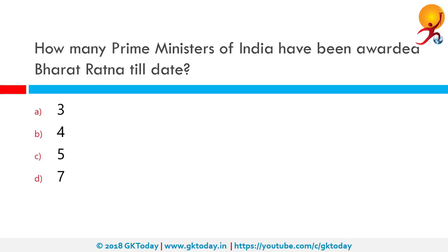How many Prime Ministers of India have been awarded Bharat Ratna till date? So far, 7 Prime Ministers of India have been awarded the Bharat Ratna. Atal Bihari Vajpayee is the 7th Prime Minister to receive the award, after Jawaharlal Nehru, Indira Gandhi, Rajiv Gandhi, Morarji Desai, Lal Bahadur Shastri, and Gulzari Lal Nanda.